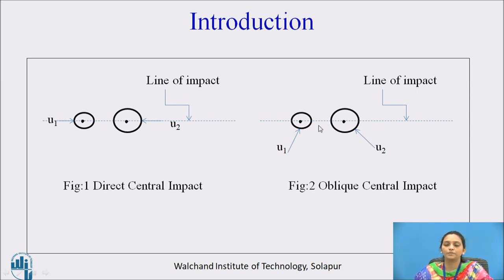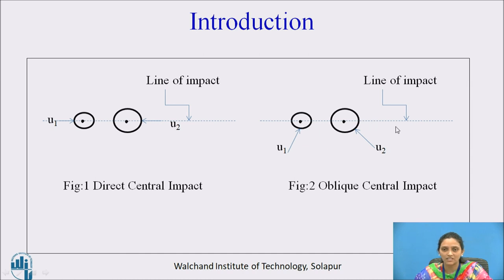Now see figure number 2. Here, the two bodies are not moving on the line of impact — they are moving in some other direction. But the center of mass of both bodies are on the line of impact. So it is called the oblique central impact. Oblique because they are not moving on the line of impact, and central because the center of mass is on the line of impact.